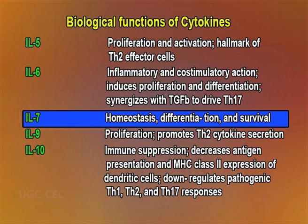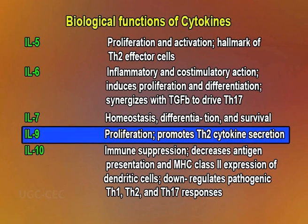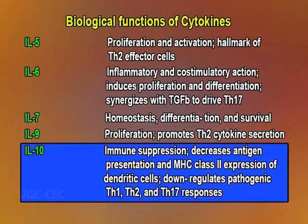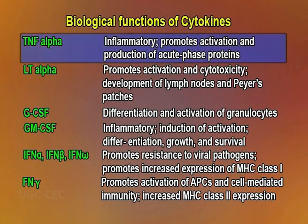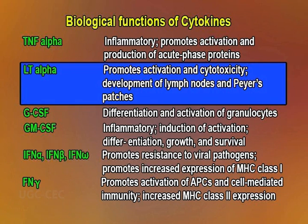Interleukin 7 is associated with homeostasis, differentiation, proliferation, and survival. Interleukin 9 is involved in proliferation and promotes TH2 cytokine secretion. Interleukin 10 is related to immune suppression — it decreases antigen presentation and MHC class 2 expression of dendritic cells, and downregulates pathogenic TH1, TH2, and TH17 responses. TNF alpha is associated with inflammatory responses and promotes activation and production of acute phase proteins. LT alpha promotes activation, cytotoxicity, and development of lymph nodes and Peyer's patches.